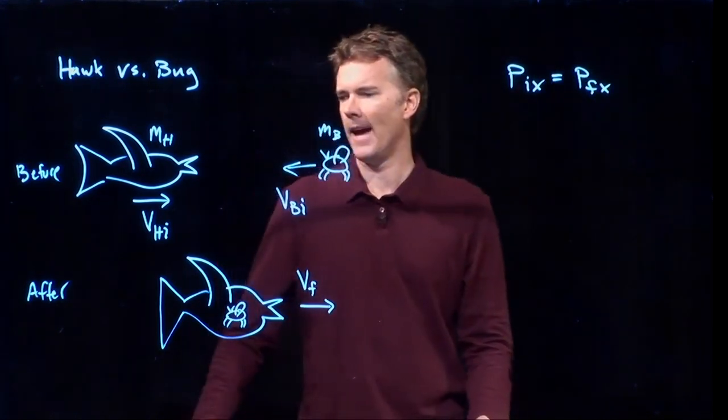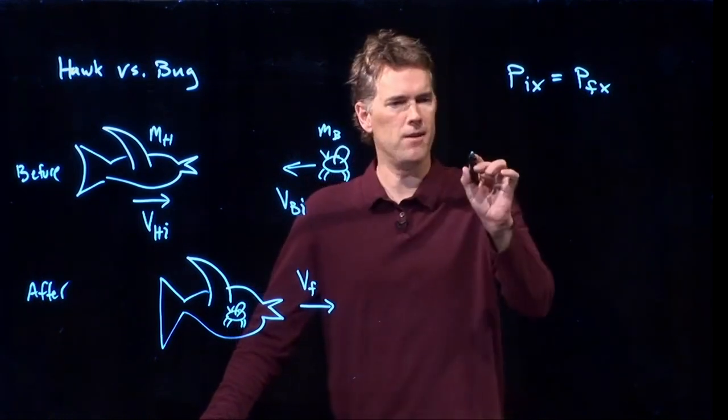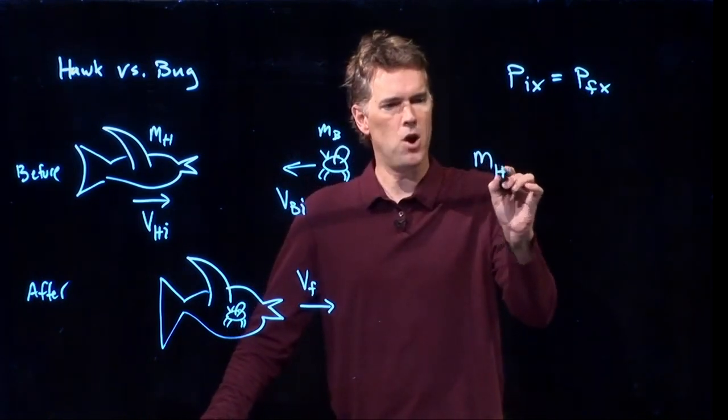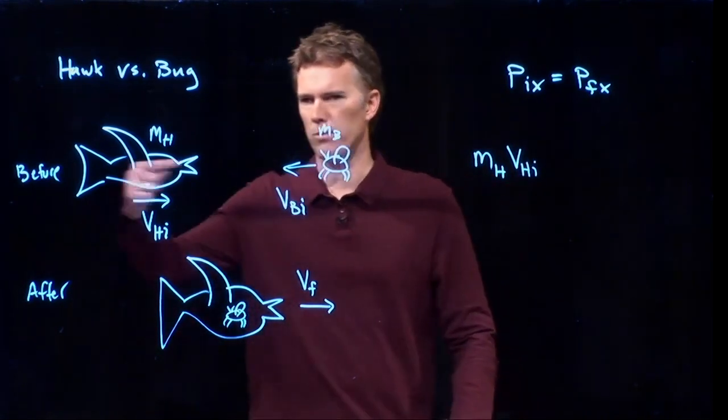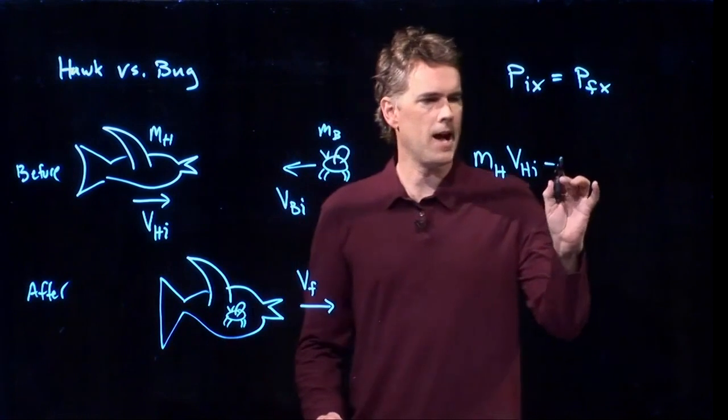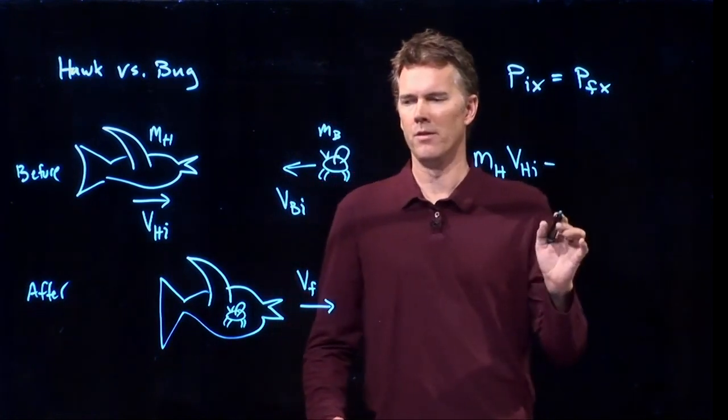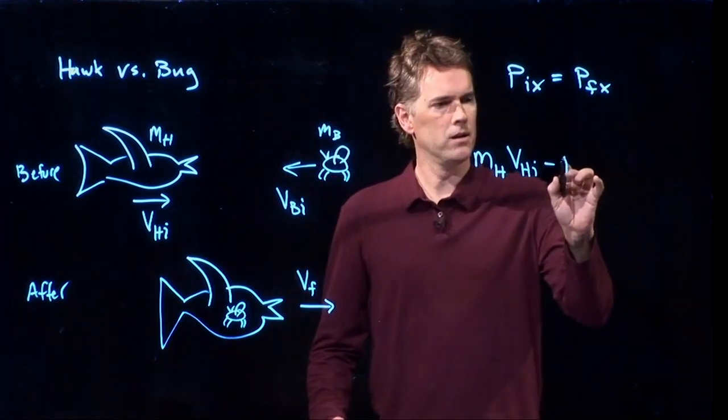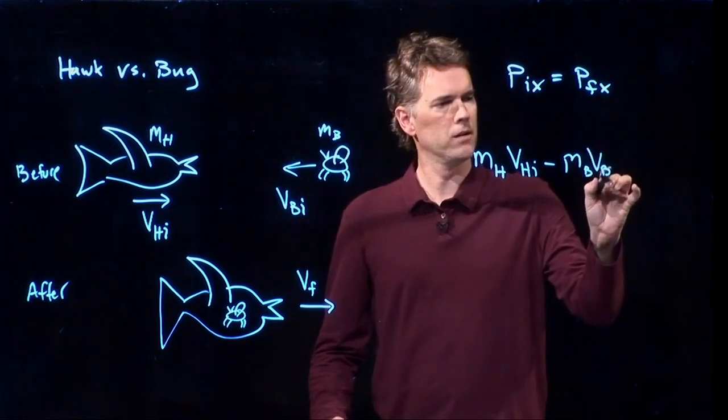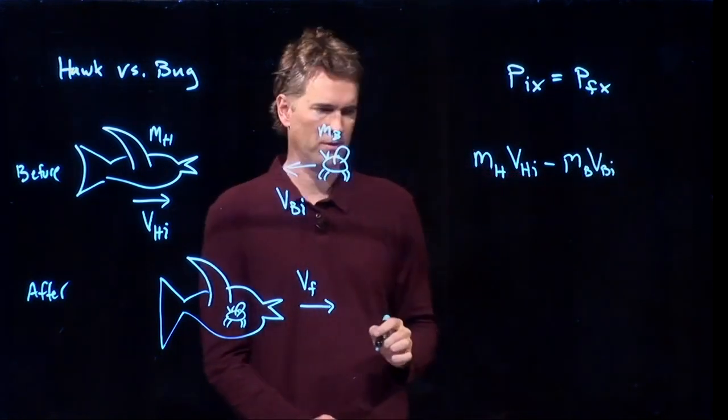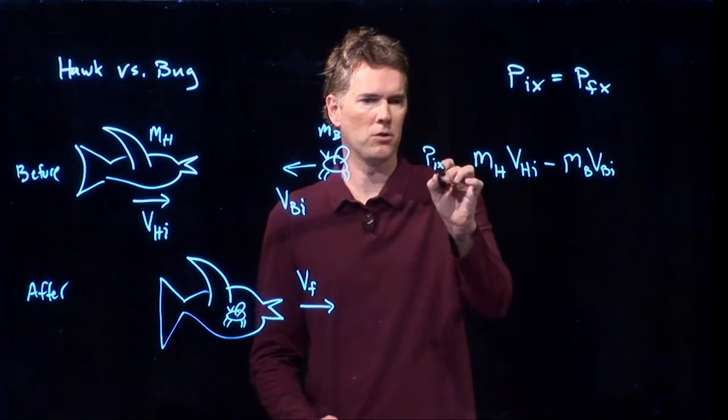So what do we have initially? Initially, we have the mass of the hawk times the speed of the hawk going to the right. We have the mass of the bug times the speed of the bug going to the left. That is our P initial.